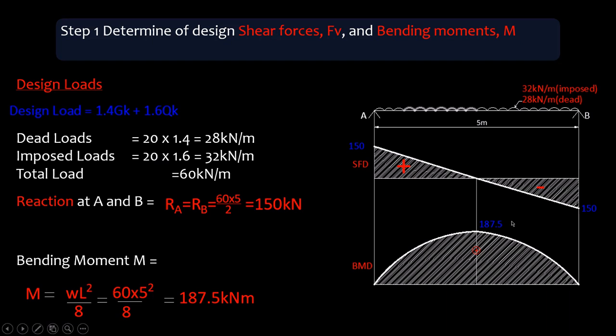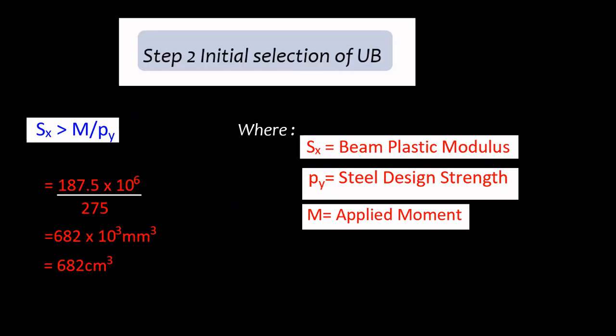So the next step, we go to the next step, and we do what is called the initial selection of the universal beam. So bending is usually the most critical element you check in a beam, and that's why we use bending to do the initial selection.